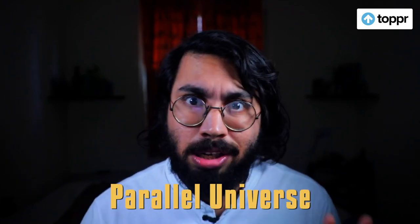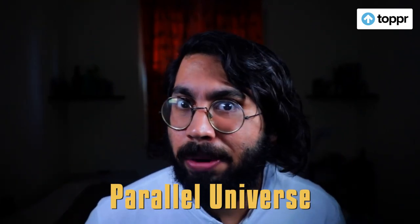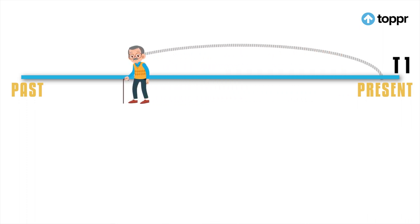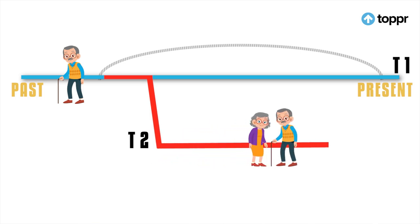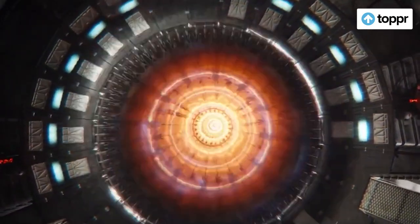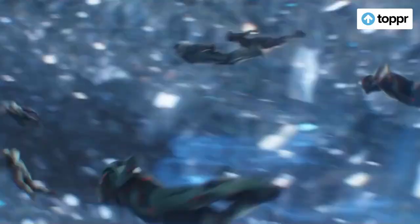Agar hum multiverse ya parallel universes ka existence confirm kar pahe, is case mein ek time traveler past mein jaata hai aur past ki events ko change karta hai, jiski wajah se ek parallel universe create hota hai. Is parallel universe mein ek naya timeline form hota hai with new events jo original events se alag hota hai, kind of like what you experienced in Avengers Endgame.